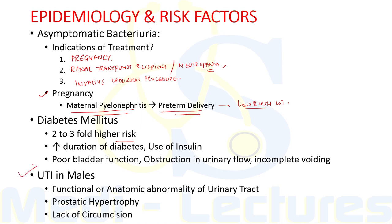Poor bladder function, obstruction in urinary flow, and incomplete voiding are additional factors commonly found in patients with diabetes that increase the risk of UTI. In male patients, the majority with UTI will have either a functional or anatomic abnormality of the urinary tract, such as urinary tract obstruction secondary to prostatic hypertrophy. In young males, lack of circumcision is associated with increased UTI risk because E. coli is more likely to colonize the glans and prepuce of uncircumcised patients and subsequently migrate into the urinary tract.